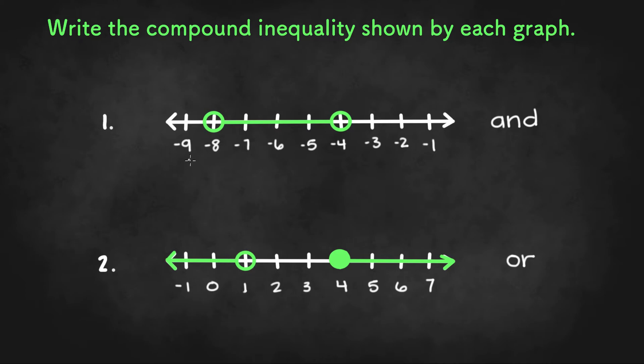So in this first graph, a number line, we have two open circles and everything in the middle. So we have negative 8 which is less than everything here, not less than or equal to because it's an open circle. And we'll use the variable x. You can choose any variable unless you are given a specific variable to use. And x is also less than negative 4. That would be our compound inequality of this graph.